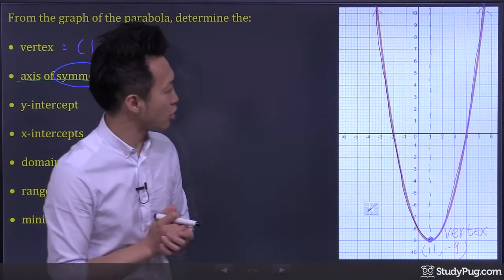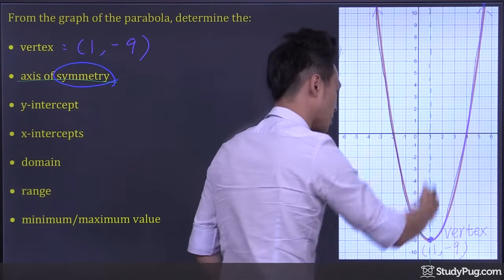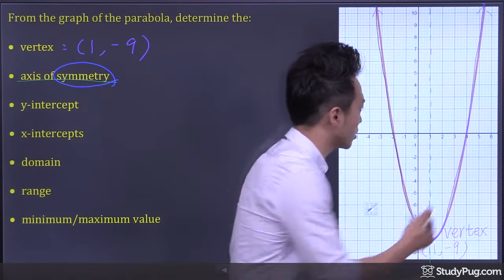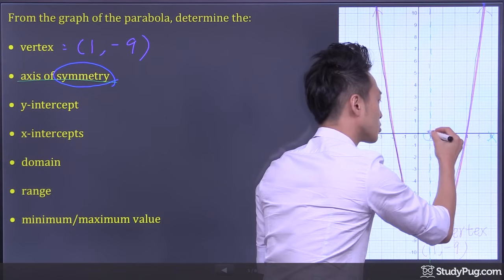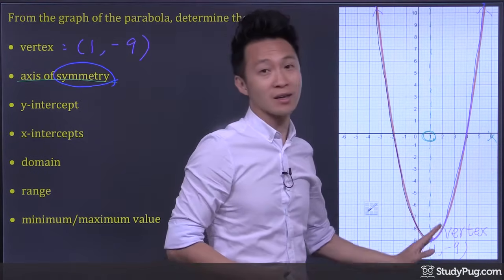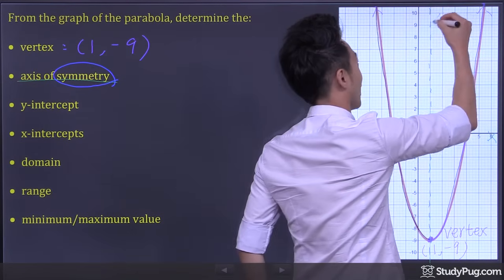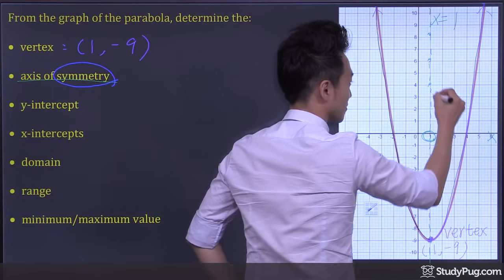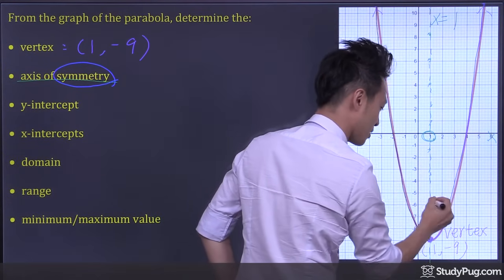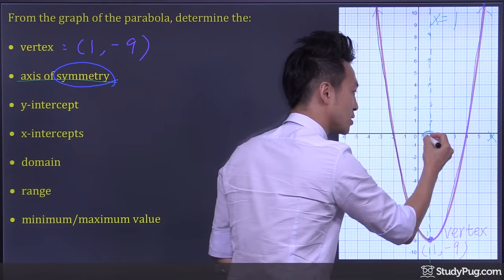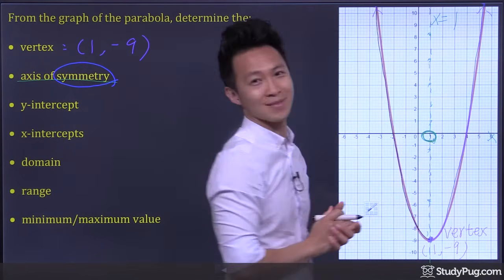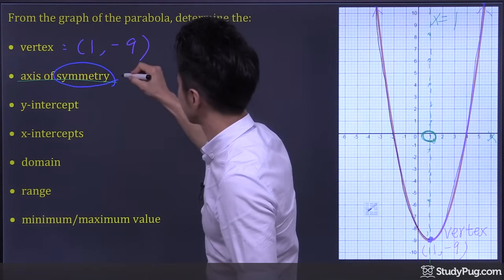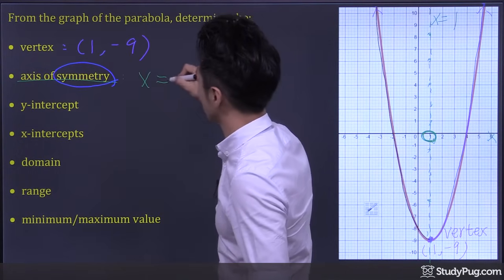Now let's determine the equation of the axis of symmetry. For a vertical line that passes through x equals 1, the equation of the line is simply x equals 1, because for every point on this vertical line, the x coordinate is always 1. So in this case, the equation of the axis of symmetry is x equals 1.